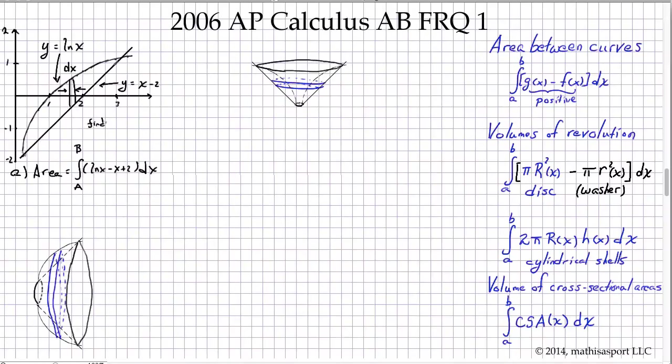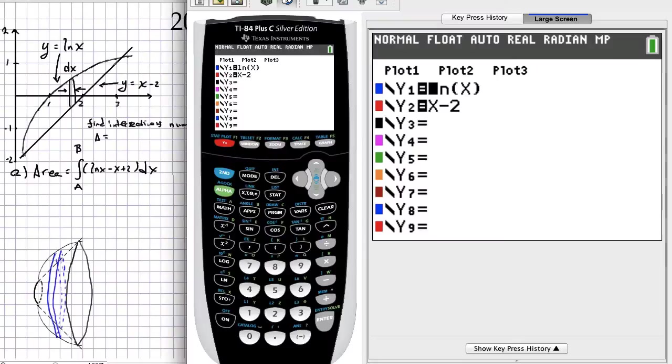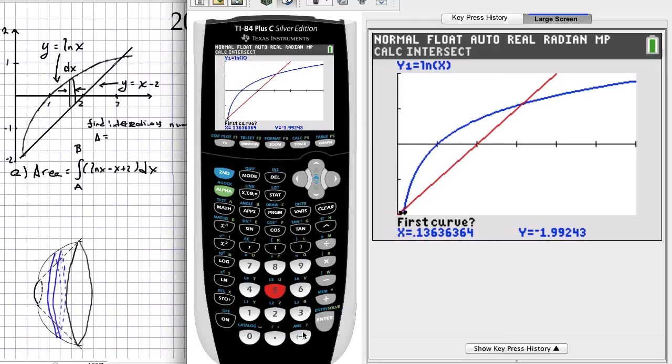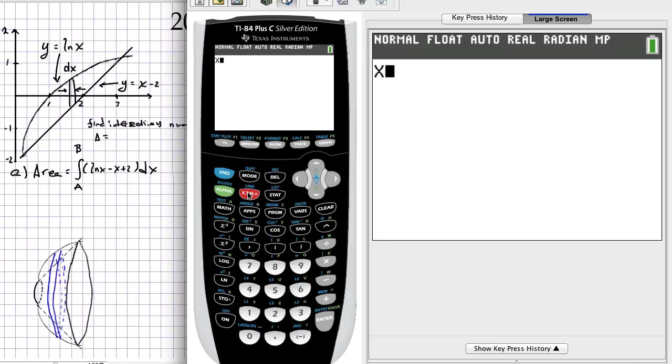We're going to find intersections numerically. I've got these functions placed in the calculator already, so let's use the intersect feature. That's fine for our first and second curve, the guess is fine. We get 0.1586 and I'm going to store that, so X is stored in alpha a.